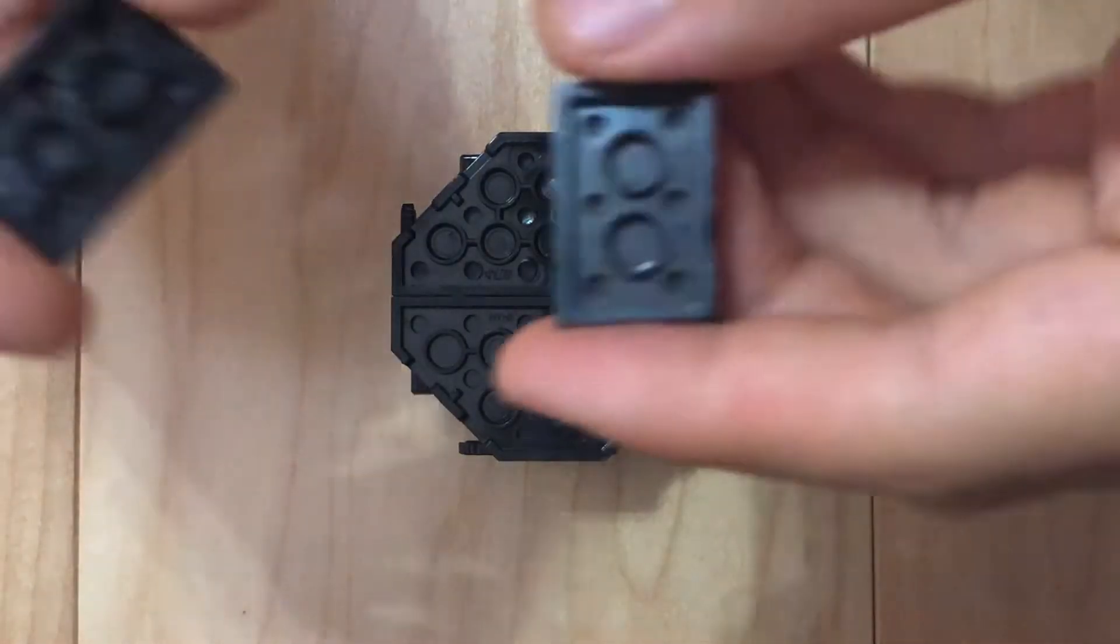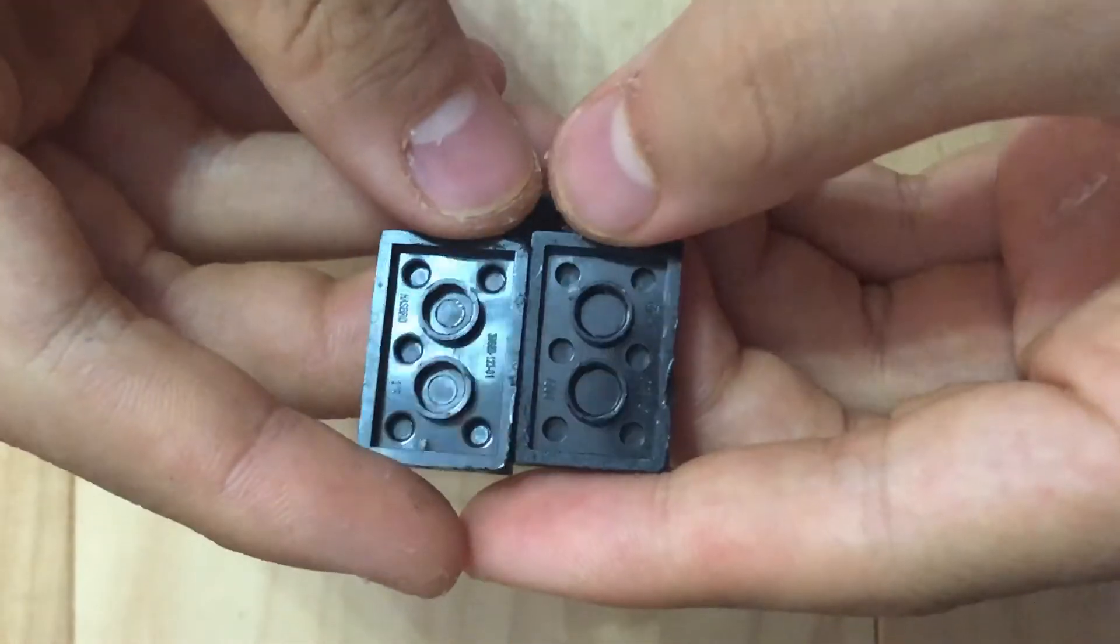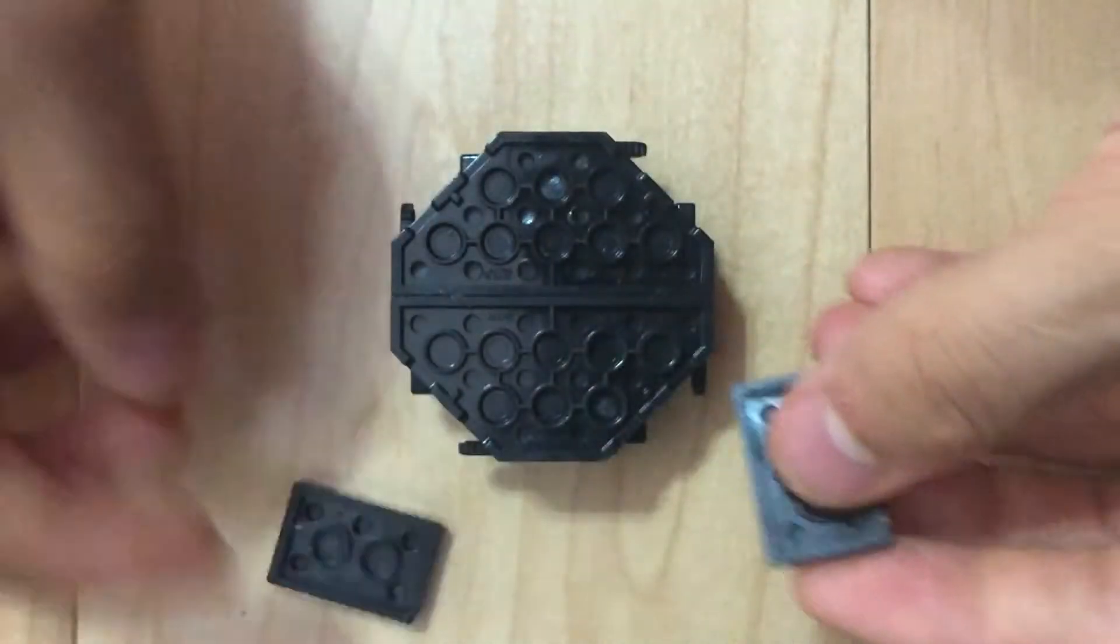Next is the twin frame, which is two of these 2x3 plates. You just put them on like this.